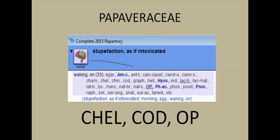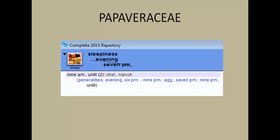Another rubric is 'stupefaction as if intoxicated on waking,' where on waking the patient feels insensible and disconnected from the real world. This rubric has 33 remedies, three from Papaveraceae — Chelidonium, Codinum, and Opium. Finally, 'sleepiness, evening from 7 PM to 9 PM' has only two remedies, both from Papaveraceae: Chelidonium and Narcotinum — a very strong rubric for this family.